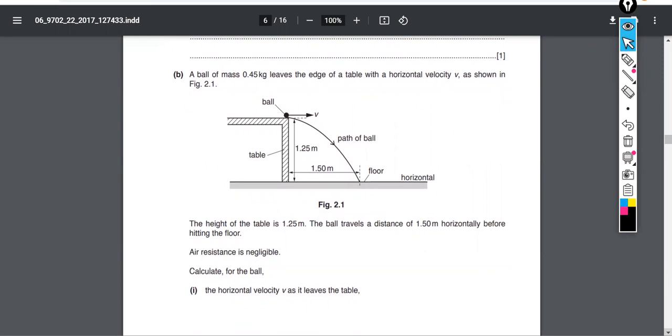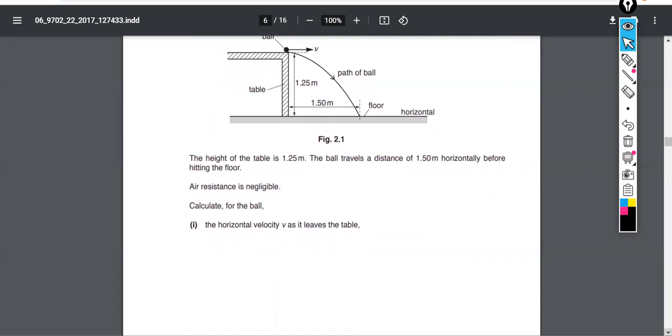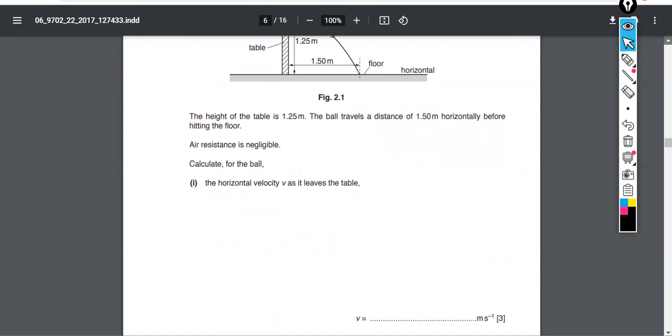The question goes on to read: a ball of mass 0.45 kilograms leaves the edge of a table with horizontal velocity v, as shown in Figure 2.1. They give you the height of the table and the distance that the ball travels horizontally before hitting the floor. They tell us that air resistance is negligible, and we are to first calculate the horizontal velocity v as it leaves the table.